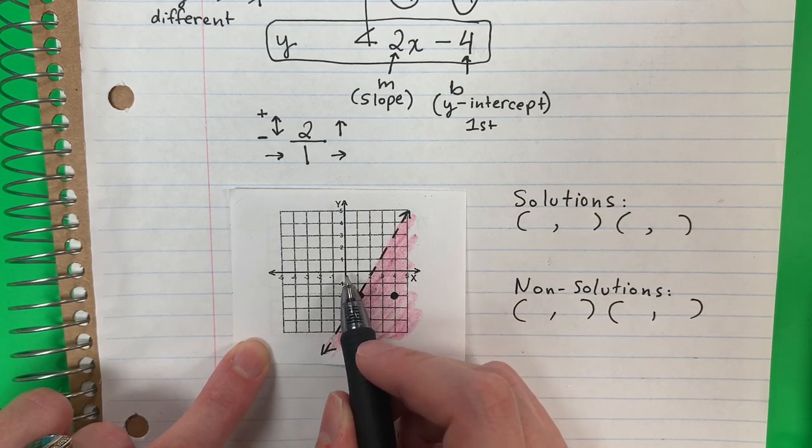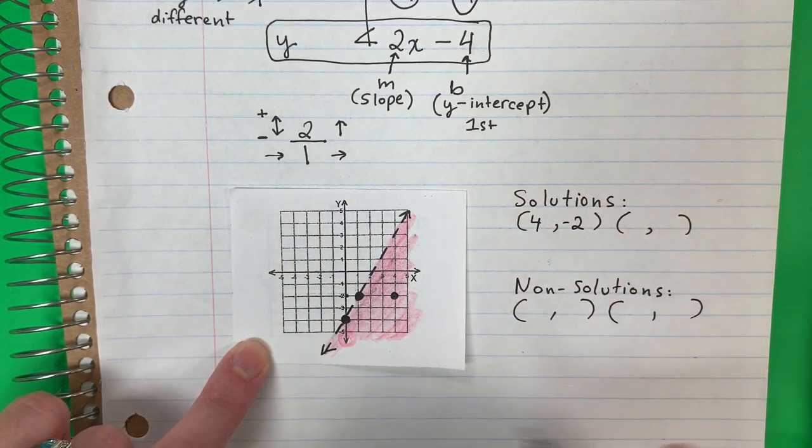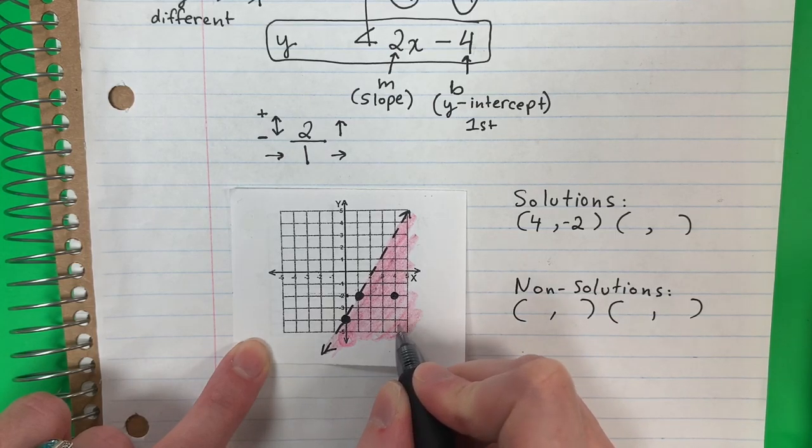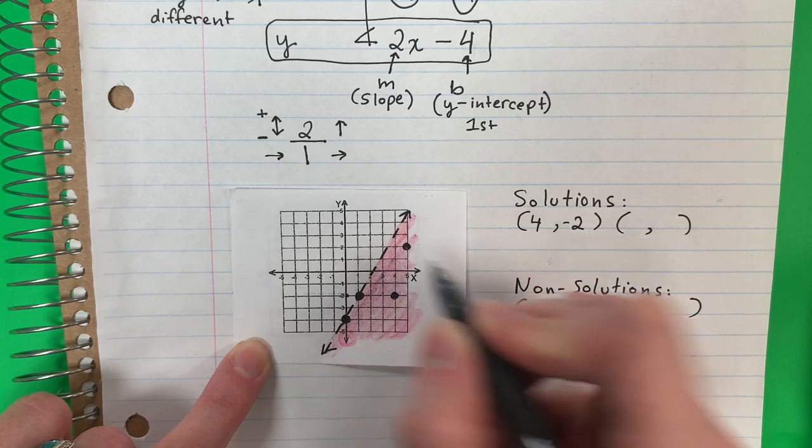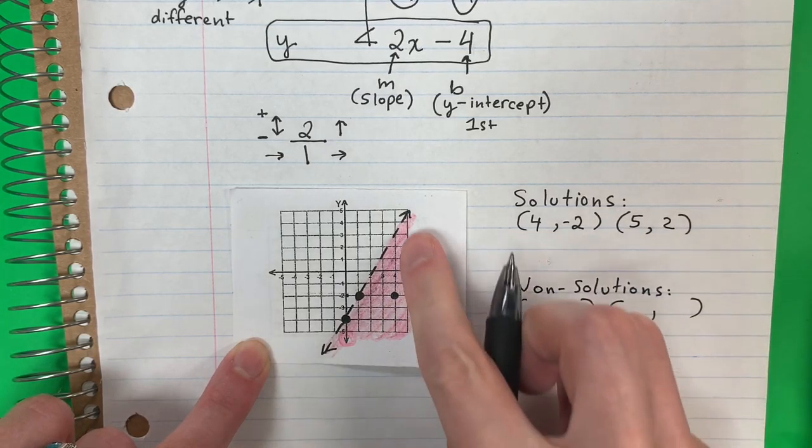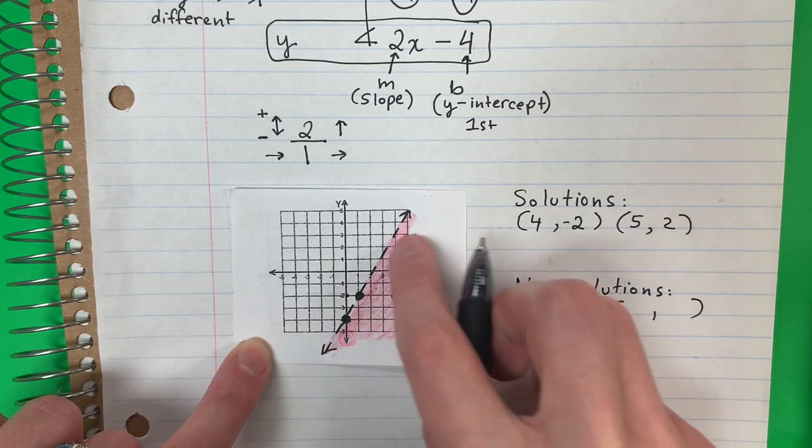4, negative 2. Another point that you can use is, let's see, this one. 5, 2. So remember, you can do any point in the color. Cualquier punto adentro del color.